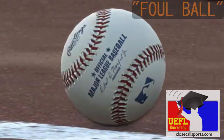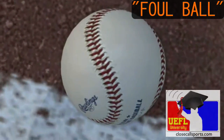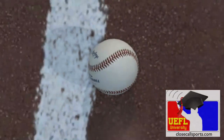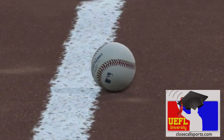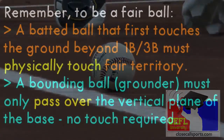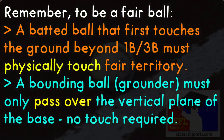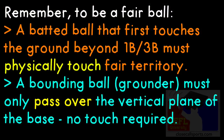This is why calls like this might get 'call stands' when they go to replay — because they don't have the ability to rotate the camera like we do. That's what the interpretation clarifies: the ball is foul unless its first touch of the ground beyond the bases is with the fair territory portion of the field, which in other words is the line itself.